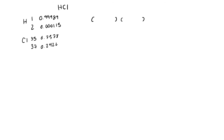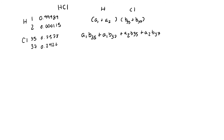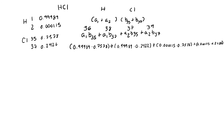Each element goes into one set of parentheses: the first for hydrogen with abundances A1 and A2, and the second for chlorine with abundances B35 and B37. We foil out the multiplication to spread the terms. After foiling, each term has an A and a B component. I then calculate the nominal mass for each term by adding the two subscripts, so I don't get lost when multiplying things out later. Finally, I substitute in the fractional abundances for each isotope.